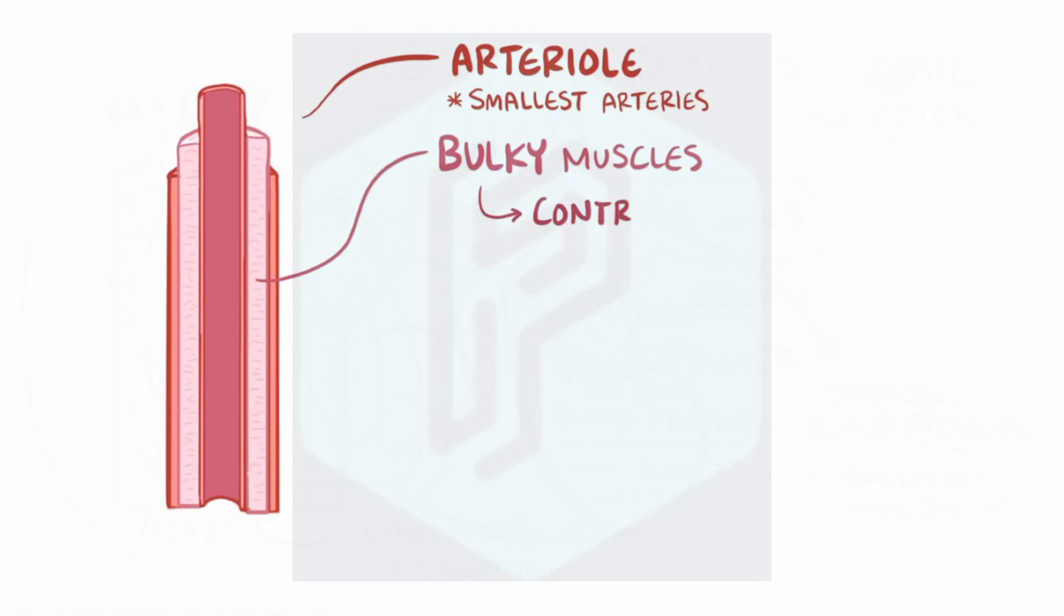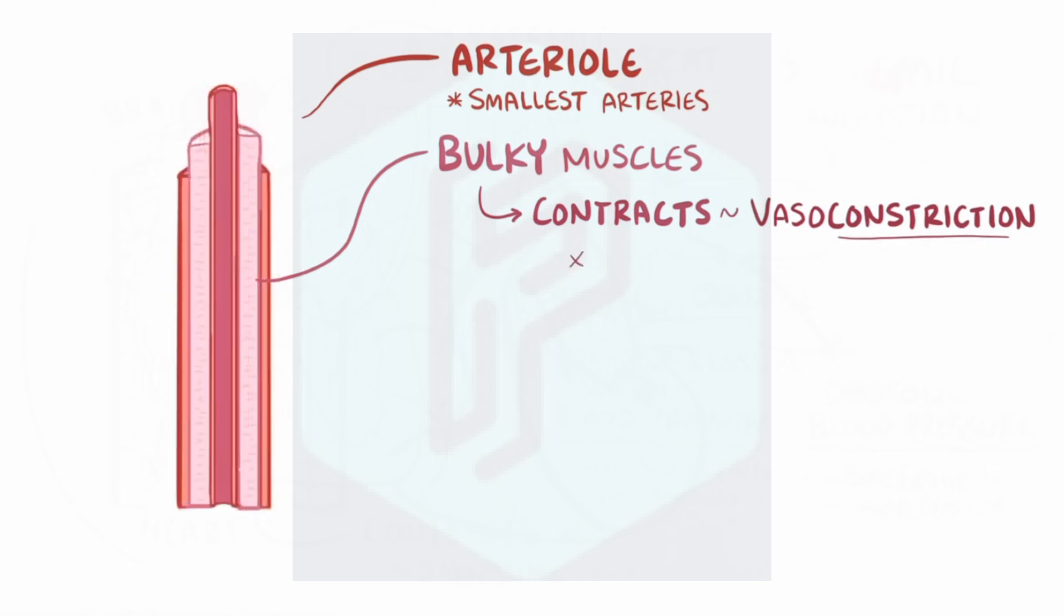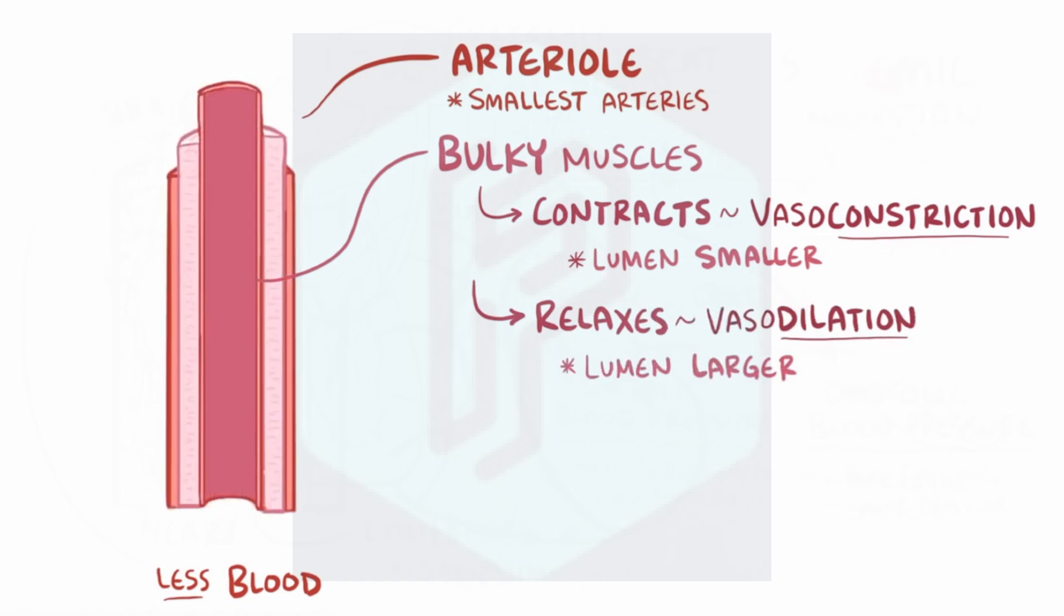These arteries eventually branch into the arterioles, the smallest of the arteries. In the arterioles, the tunica media is bulky and can contract in response to hormones in the autonomic nervous system, which is called vasoconstriction, where the lumen gets a lot smaller, which decreases the blood to a capillary bed and ultimately the organ or tissue it supplies. Also though, these vessels can relax, or vasodilate, and the lumen's diameter increases, which allows more blood flow.